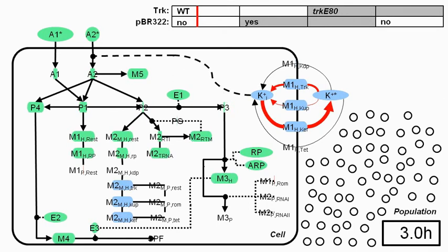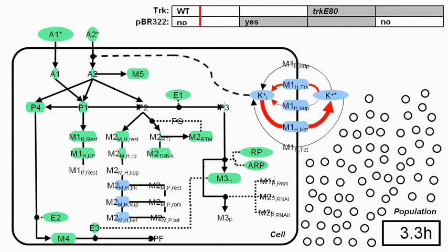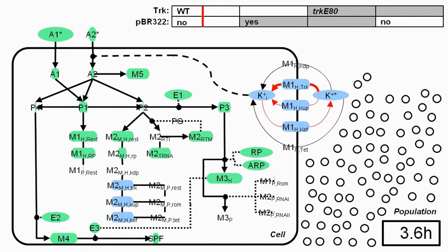One feature that is evident in most state variables is the doubling during the cell cycle. An abrupt drop in all state variables indicates a division event.